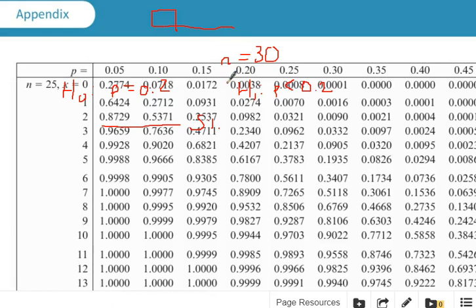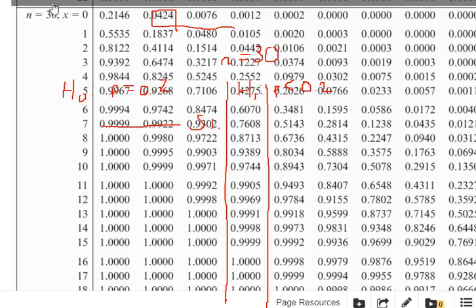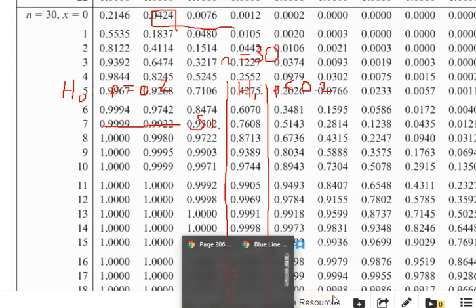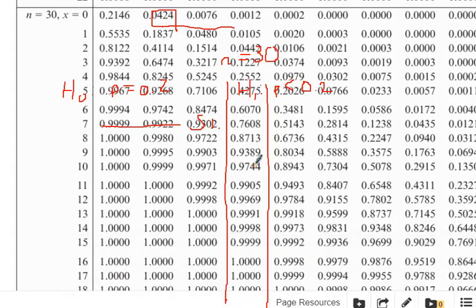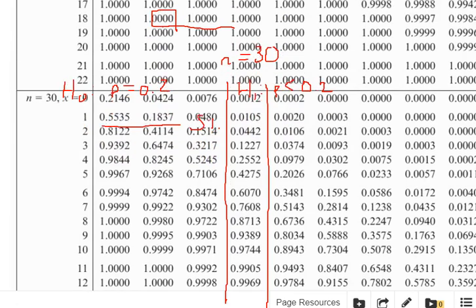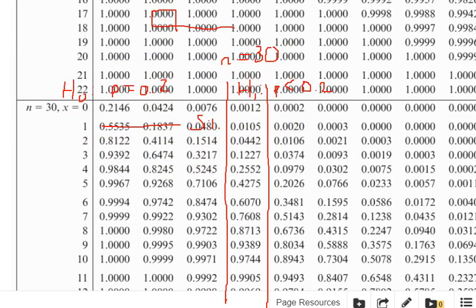Here we've got 0.2, so we're looking in this column here. So I'm going to draw a line down here, so we will draw two lines, so we can see that this is the column we're looking at when we scroll down.